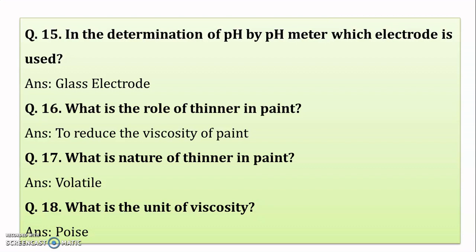In the determination of pH by pH meter, which electrode is used? In the determination of pH using a pH meter, a glass electrode is used.